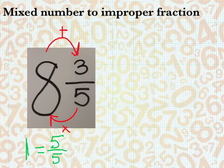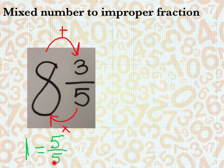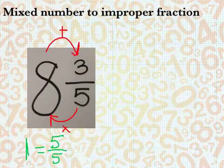And the reason we can do that is because these 8 wholes, we want to think of in fraction form, which means we're going to have 8 of these 5 fifths. So, 5 times 8 is 40.